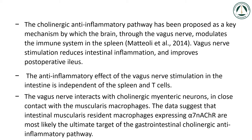The vagus nerve interacts with cholinergic myenteric neurons in close contact with the muscularis macrophages. The data suggest that intestinal muscularis resident macrophages are most likely the ultimate target of the gastrointestinal cholinergic anti-inflammatory pathway.